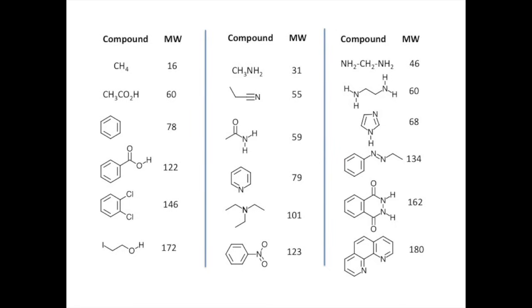There is a very useful concept that we can employ with regard to nitrogen. Take a moment to look at this table. Pause the video and see if you can see a pattern in the data. All of the compounds in the first column have an even molecular weight and contain no nitrogen atoms. All of the compounds in the middle column contain one nitrogen atom and exhibit an odd molecular weight. All of the compounds in the right have an even number of nitrogens and once again exhibit an even molecular weight. So, here is an important principle: An odd molecular weight indicates an odd number of nitrogen atoms.